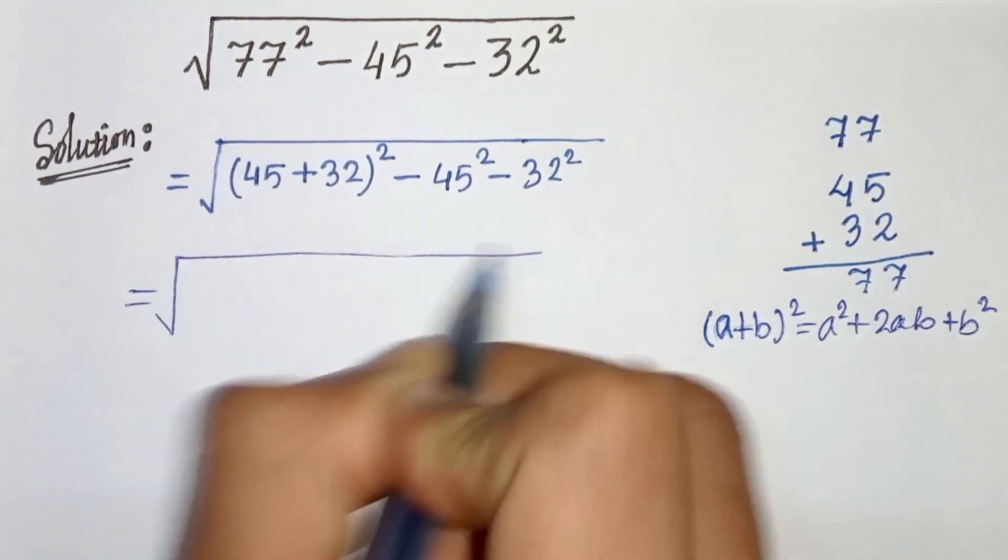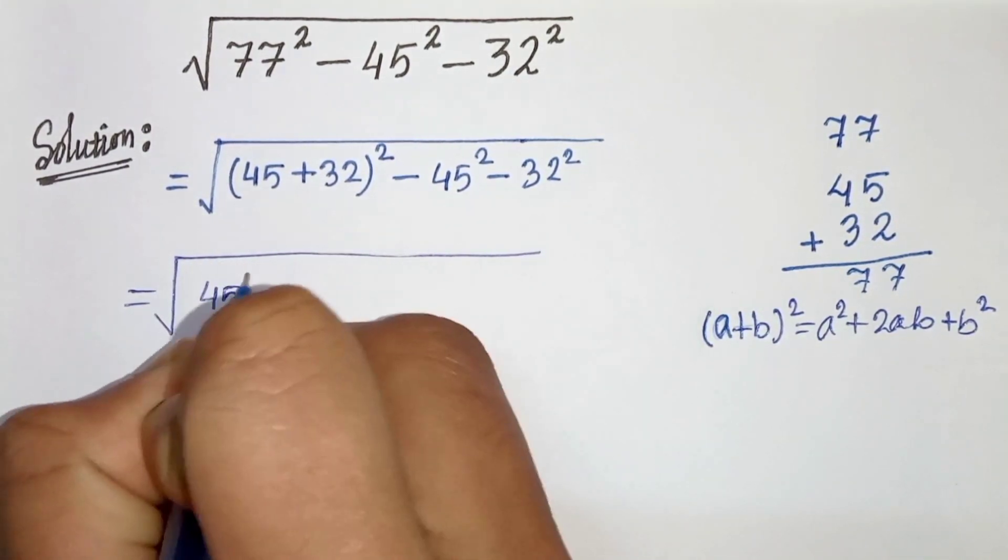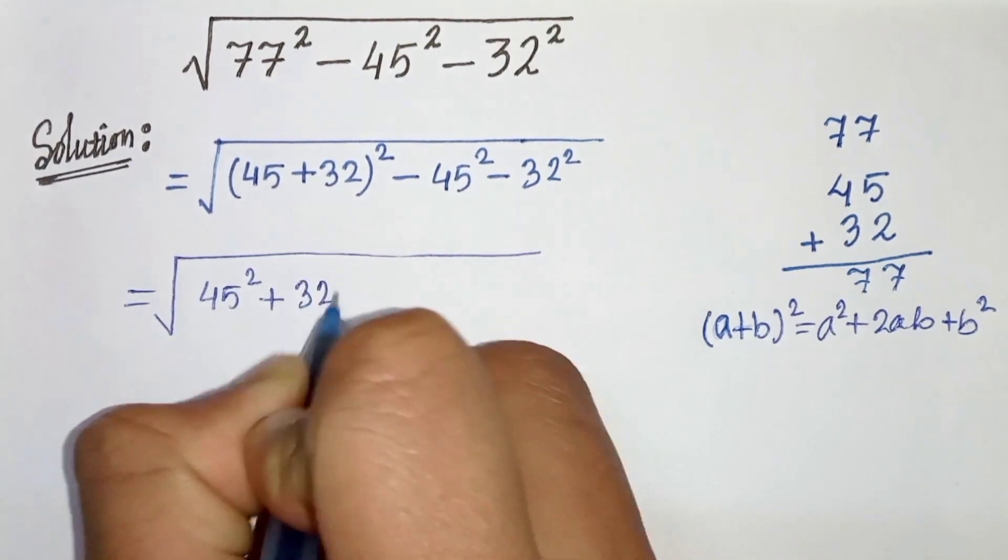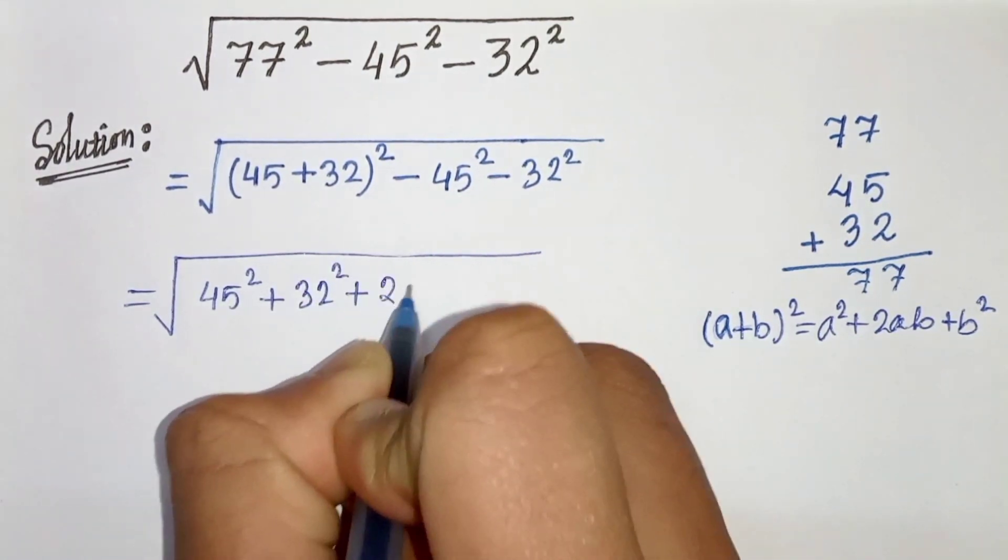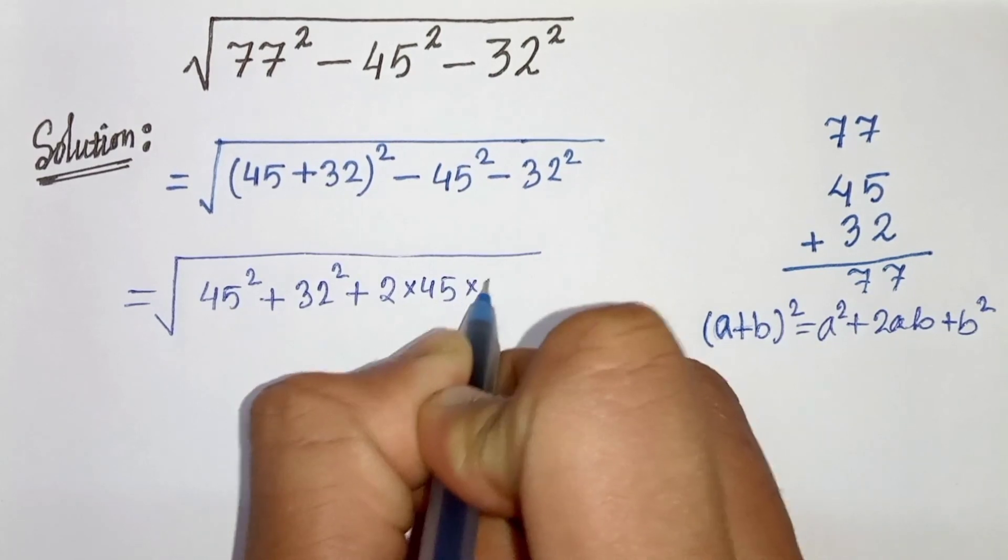So from this we can write root under a square, that is 45 square, plus b square, that is 32 square, plus 2ab, 2 times 45 times 32.